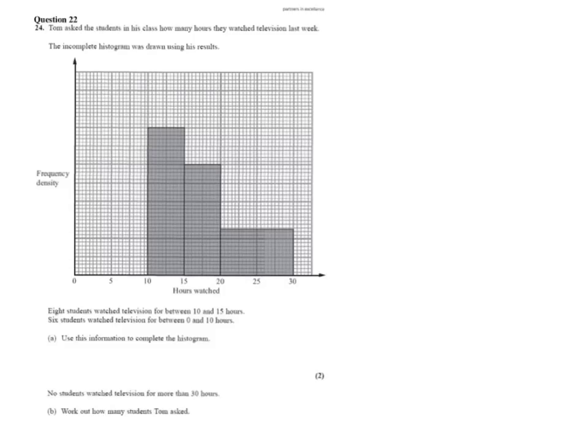So Tom asked the students in his class how many hours they watched television last week. We have an incomplete histogram drawn using his results. Eight students watched television for between 10 and 15 hours. Six students watched between 0 and 10 hours. Use this information to complete the diagram.